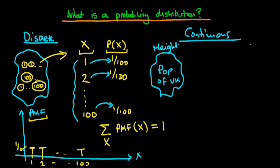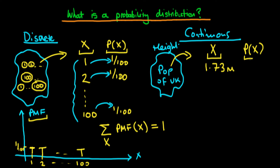We take a sample from that population, measure that individual's height, and call that value a random variable x. We might then ask: what is the probability of x taking a particular value, say 1.73 metres?